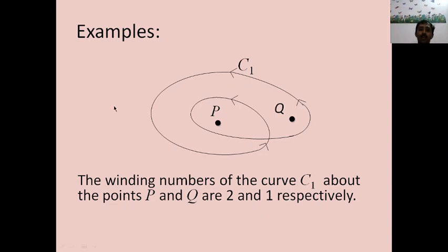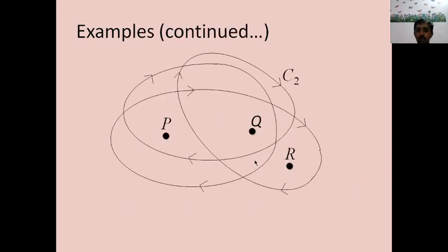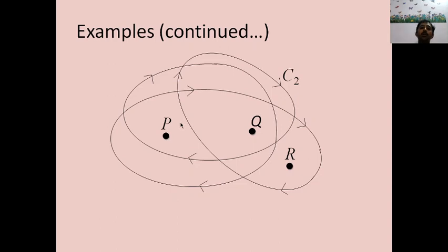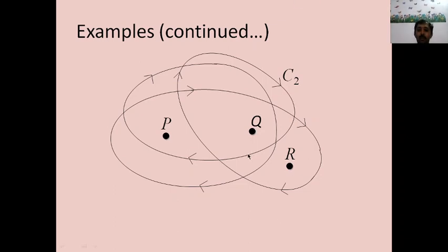For curve C2, about the point P, the curve traverses twice in the clockwise direction, so the winding number of C2 about P is −2. About the point Q, C2 traverses twice in the clockwise direction, so the winding number of C2 about Q is −3. About the point R, C2 traverses only once in the clockwise direction, so the winding number of C2 about R is −1.